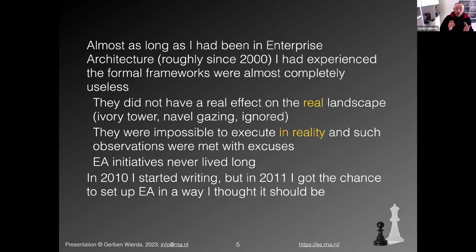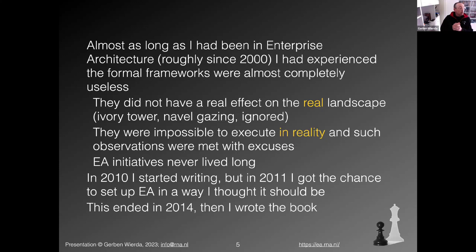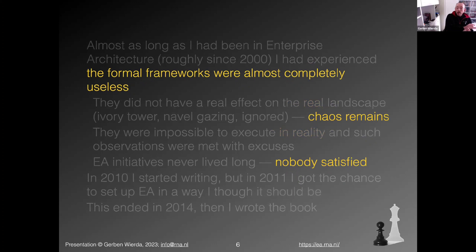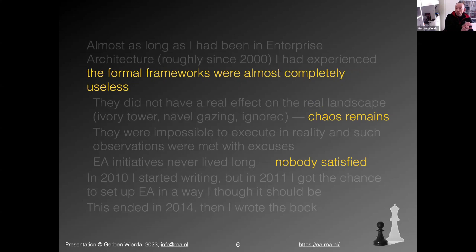In 2010 I started writing, but then in 2011 I got the chance to set up enterprise architecture the way I thought it should be — a greenfield situation. That period ended in 2014. The big advantage was that not everything worked, so I could also write a chapter on the hurdles, the things that went wrong, and what I learned. In summary: the formal frameworks I met were almost completely useless, meaningless, no effect — the chaos remained whatever amount of EA work people were doing.